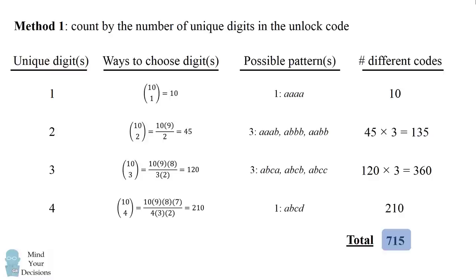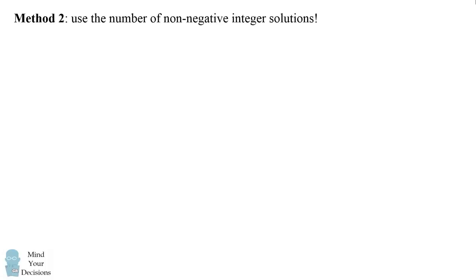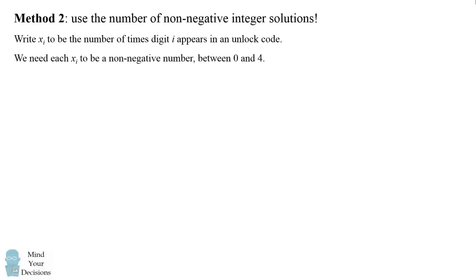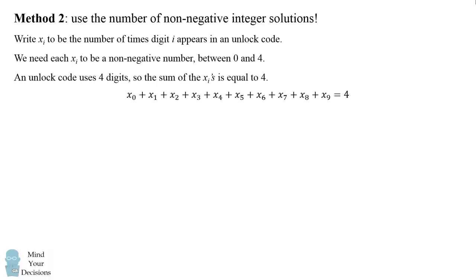Is there another way to get to the answer more directly with fewer computations? The answer is yes. There is an elegant combinatorial method where you count the number of non-negative integer solutions to an equation. We set x sub i to be the number of times digit i appears in the unlock code. We need each x sub i to be a non-negative number between 0 and 4, and since an unlock code uses 4 digits, the sum of all x sub i's must equal 4.